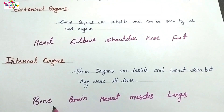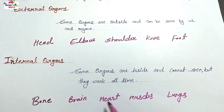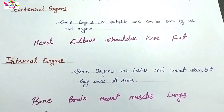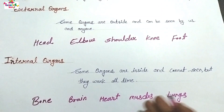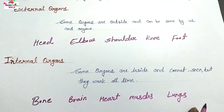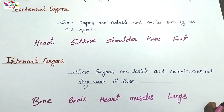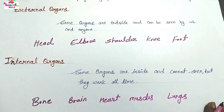For example: bone, brain, heart, muscles, lungs. Yeh saare parts hamare saree ke andar maujud hotay hain, aur yeh pratyek samay kaam karte hain. Thanks for watching. Thank you.